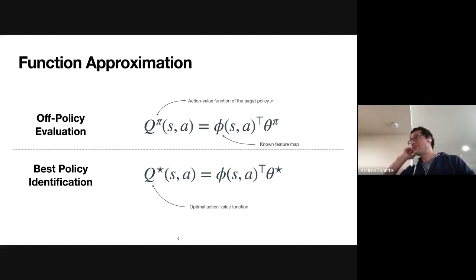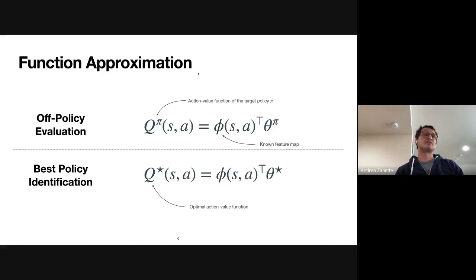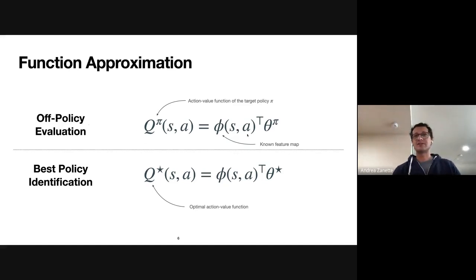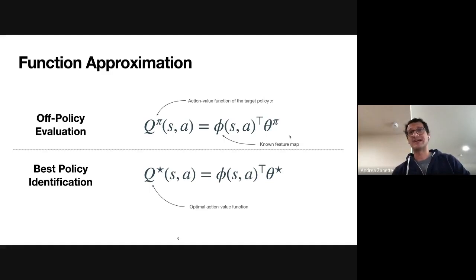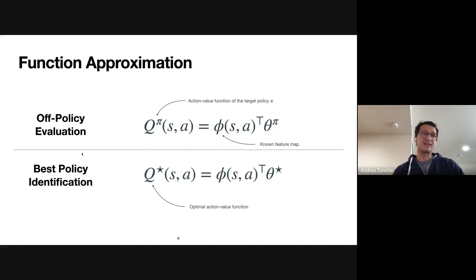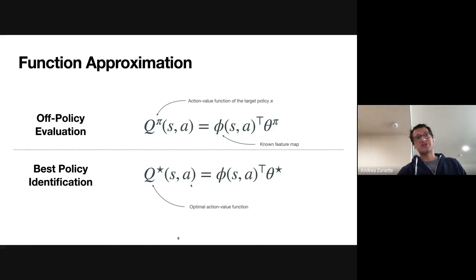As the state and action space is often very large, we look at the function approximation setting, where you assume you have a good predictor for the problem you're trying to solve. For off-policy evaluation, we look at the easiest possible setting where the action-value function is captured by a linear map expressible as an inner product of some known feature map phi and some unknown parameter theta that depends on the policy.